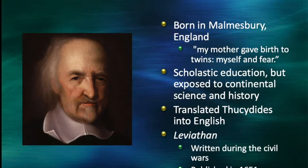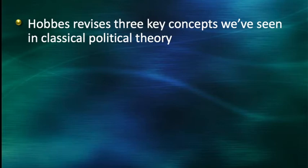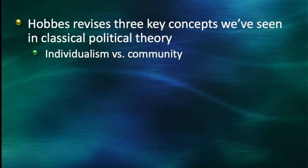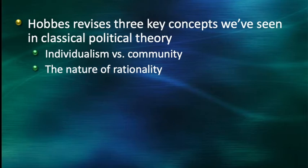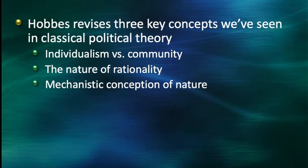Before we turn to the text itself, it's important to set up what we're going to be talking about. You should be thinking about how Hobbes revises three key concepts from classical political theory. First, the relationship between individuals and the community: as we saw from Plato, Aristotle, Al-Farabi, and Confucius, there's a great emphasis placed on the community over the individual. Second, what does reason and rationality mean for Hobbes? It's a much more instrumental form of rationality than the Platonic focus on the form of the good or any normative account of justice in our reasoning. Finally, Hobbes embraces a mechanistic conception of nature — a child of the scientific revolution — rather than thinking of nature as teleological or purpose-driven in an Aristotelian sense.